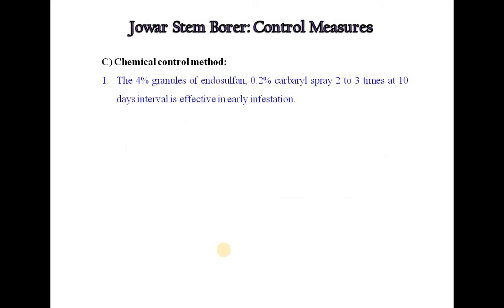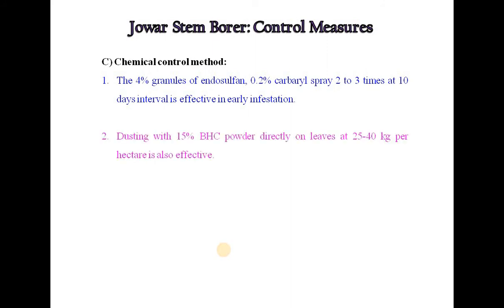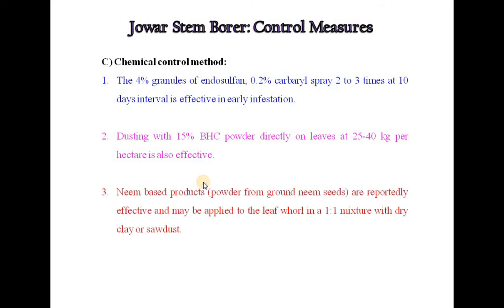For chemical control, 4% granules of endosulfan and 0.2% carbaryl spray 2-3 times at 10-day intervals is effective in early infestation. Dusting with 15% BHC powder directly on leaves at 25-40 kg per hectare is also effective. Neem-based products are reportedly effective and may be applied to the leaf roll in 1:1 mixture with dry clay or sawdust. This concludes the control measures for jawar stem borer.